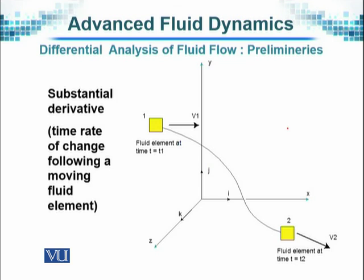This is represented in a diagram here, and the substantial derivative is also reflected. We try to see the changes that take place during a small change in time. If the fluid has a velocity V1 at time t1, we consider what happens at time t2, where the velocity will obviously be different since the fluid is moving. In a three-dimensional x, y, z space — as shown in the diagram — the fluid element and its variation are considered at time t1 and at time t2.